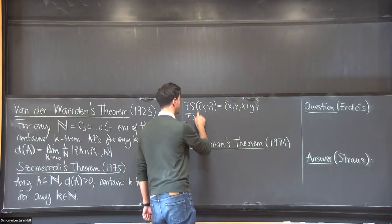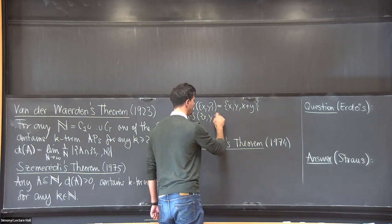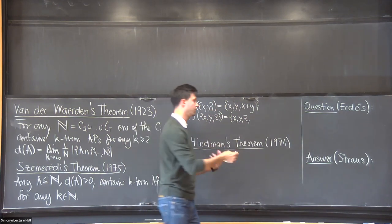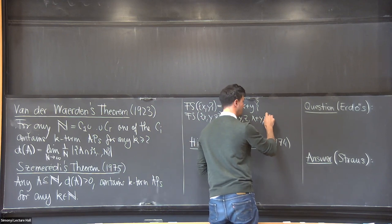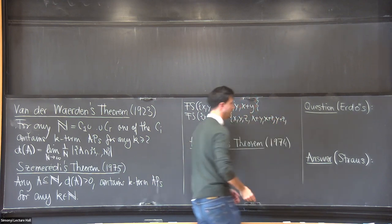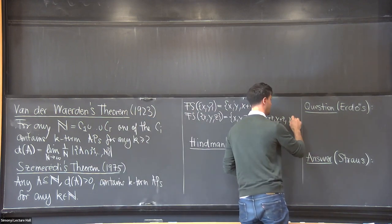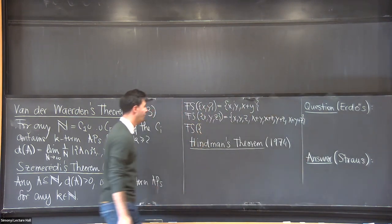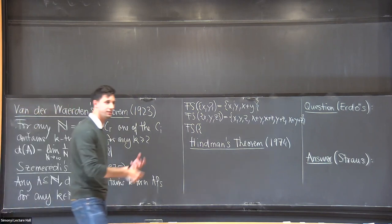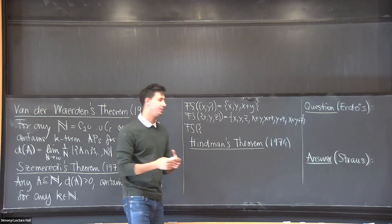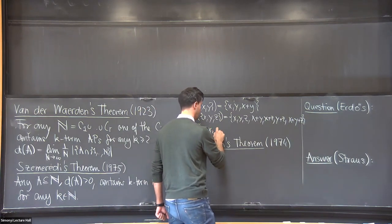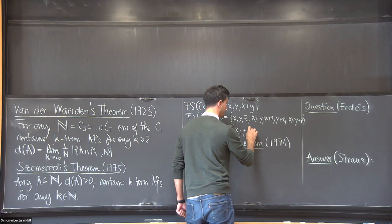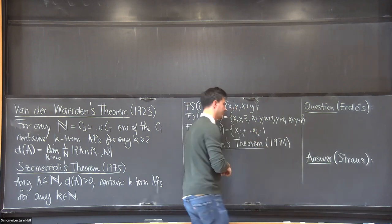To state Hindman's theorem, I first have to tell you what is a finite sum set. The finite sum set of a two-element set x and y is just equal to x, y, and x plus y. Similarly, the finite sum set of three integers is just x, y, z—these are all the one-sums—then all the two-sums x plus y, x plus z, y plus z, and then finally all the three-sums, which is only one: x plus y plus z. I'm sure you can now guess what is the finite sum set of an infinite sequence. It's just the sequence itself together with all the finite sums I can build out of it. So I can write it: x_{i_1} plus x_{i_k} for the i_k's that are all different.